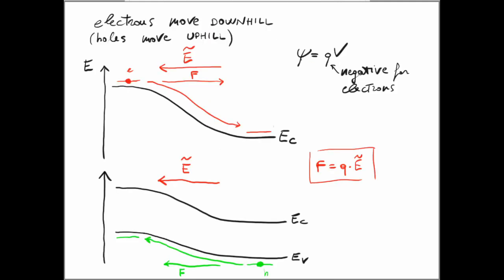We can link what we just said to the principle that electrons move downhill and holes move uphill, providing a second view of why this happens. In a region where the band is non-flat, there is an electric field directed in a particular way. Using Coulombic forces, we know a force acts on the electron in that direction, putting it in motion downhill. Similar arguments apply for holes.